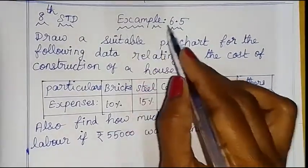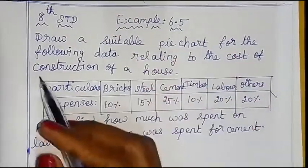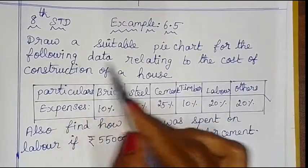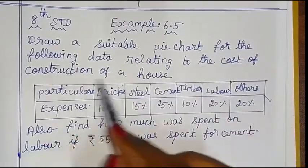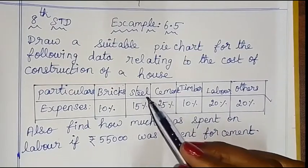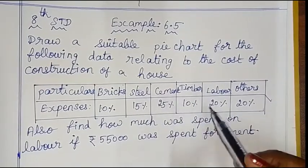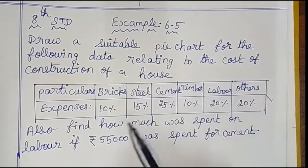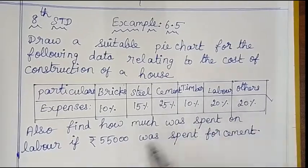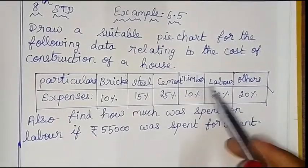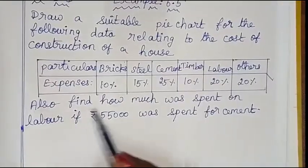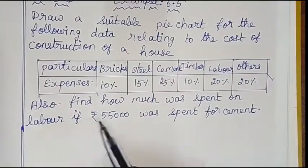Hello children. I am going to show you an example of 6.5: Draw a suitable pie chart for the following data relating to the cost of construction of a house. When you build a house, you can see the cost of construction in this pie chart, this circle graph. Also find how much was spent on labor.